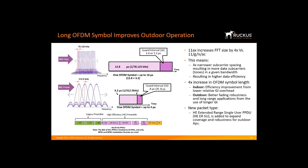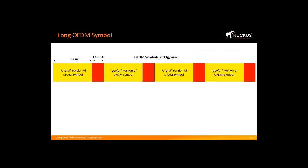The outdoor operation is handled by using a new extended range single-user packet type. The diagram at the top shows the OFDM symbol for 11G, N, and 11AC. The red portion represents the preamble, and the yellow portion is the useful data portion composed of OFDM symbols. OFDM works by transmitting data for 3.2 microseconds, then transmitting a guard interval, and then repeating the process. The guard interval is either 0.4 or 0.8 microseconds.